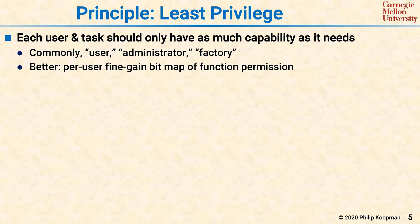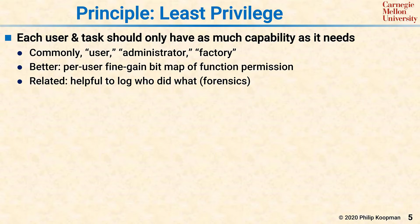The finer-grain, the better. A related concept is logging what happens so that forensically, if there's a bad event, you can find out how that event happened, which user account was compromised, and so on. Some common privilege mistakes include the following.